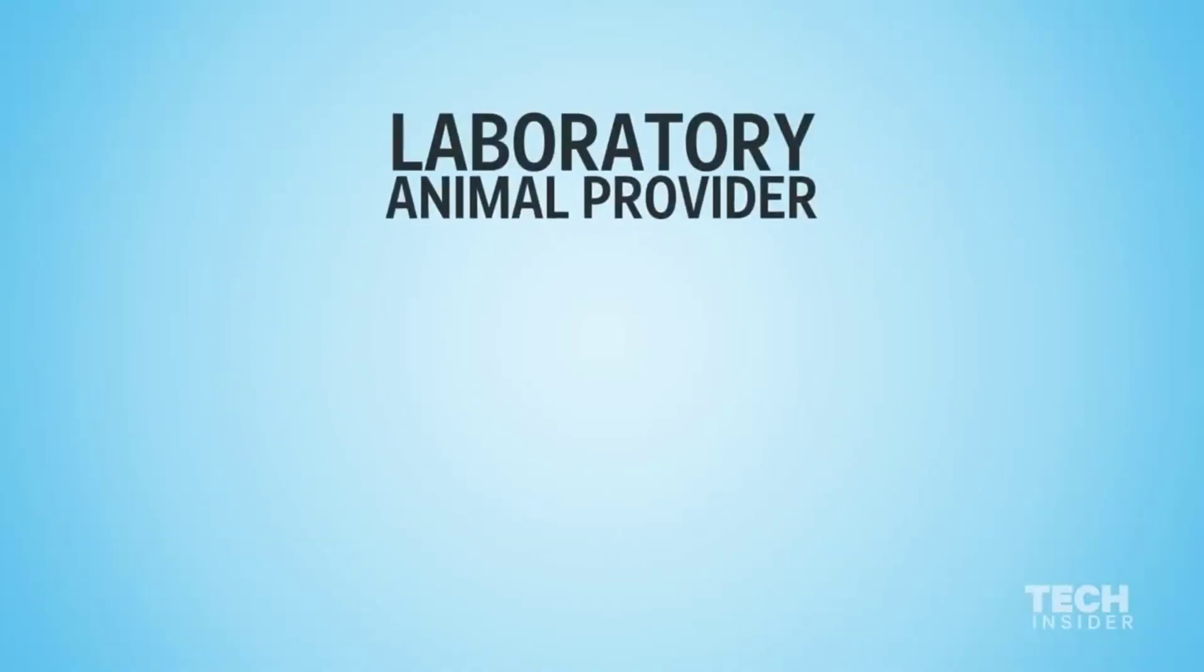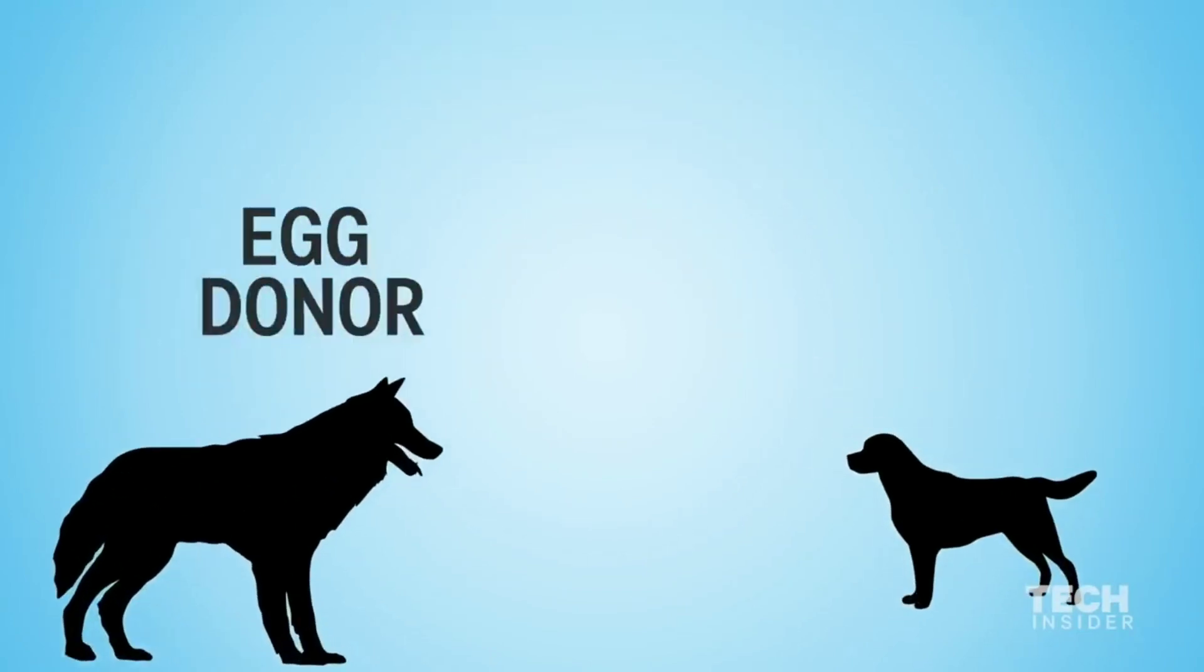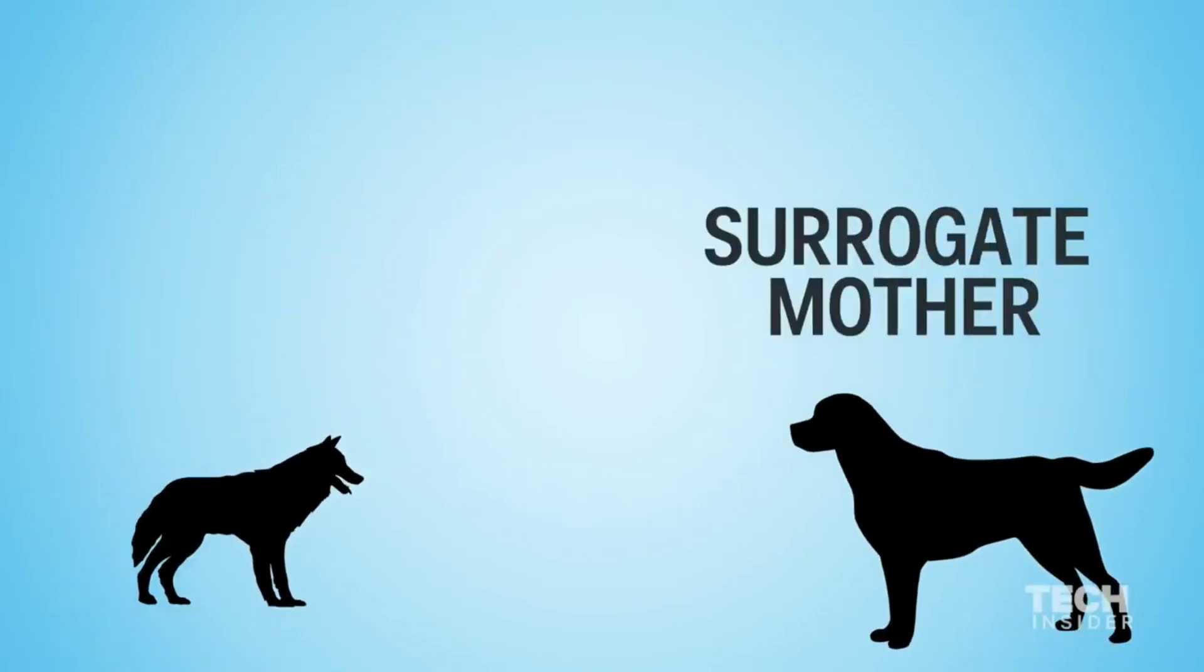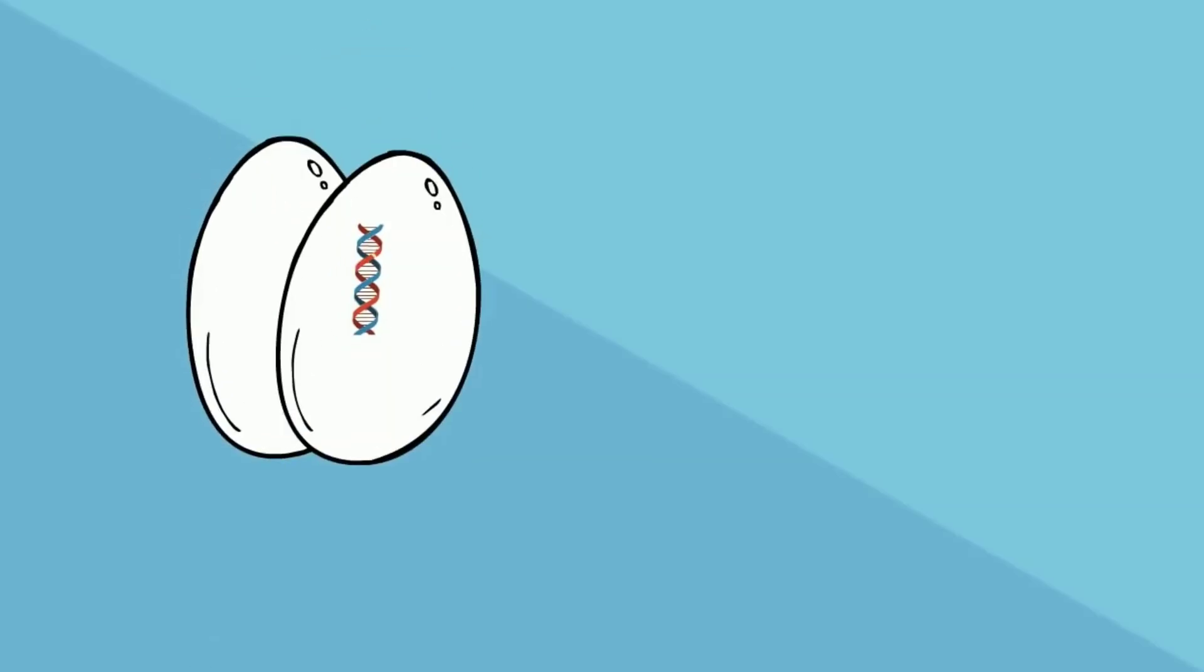SUAM then goes to a laboratory animal provider where they rent two dogs, an egg donor and a surrogate mother. Starting with the egg donor, once the eggs are collected, a scientist places them under a microscope and uses a pipette to extract the nucleus.